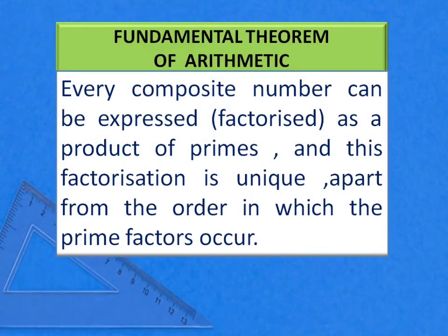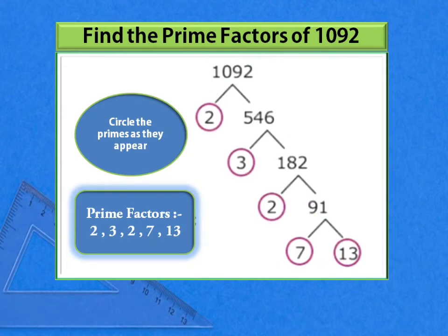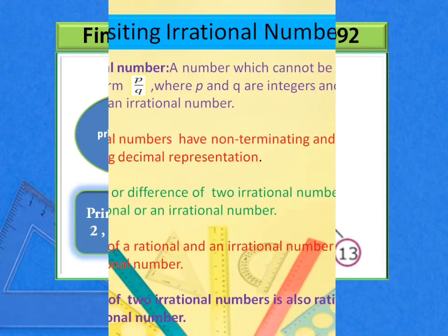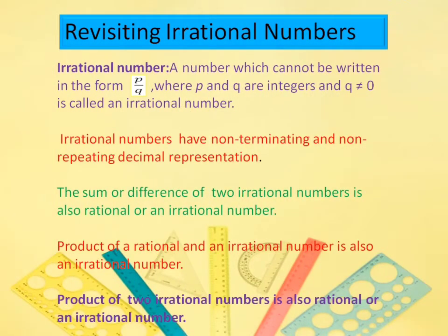Next is the fundamental theorem of arithmetic. Every composite number can be expressed as the product of primes. Now take an example 1092. Look at the prime factors. We see that the circles are represented as the prime numbers, and revisiting the irrational numbers.